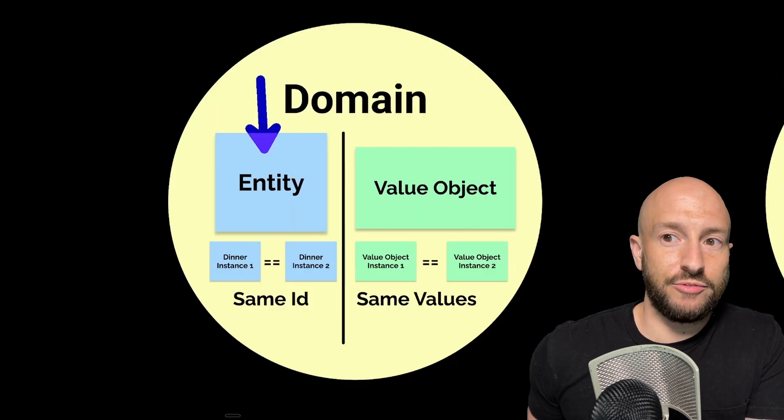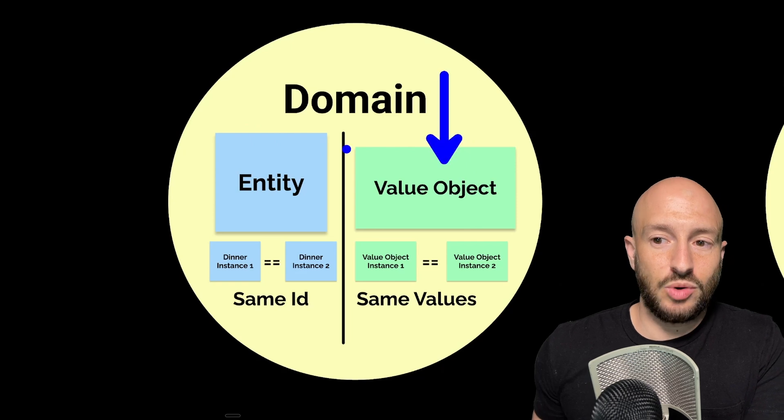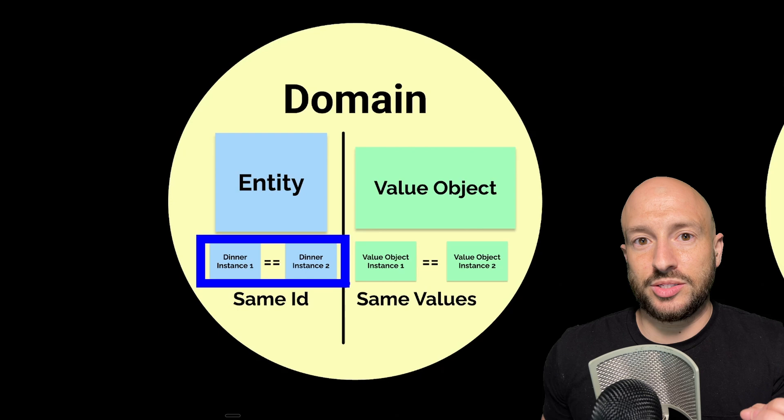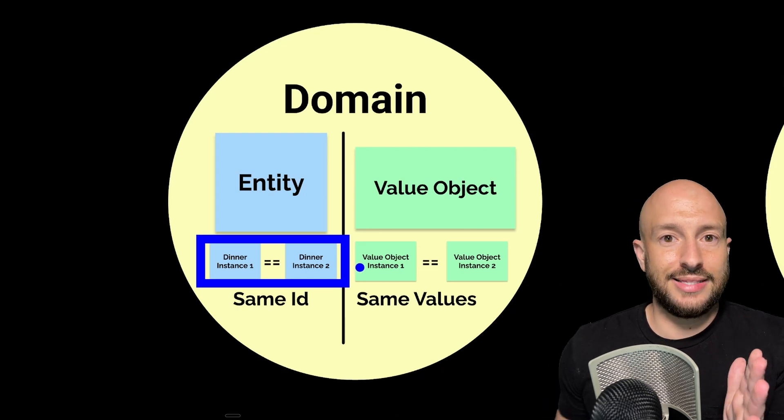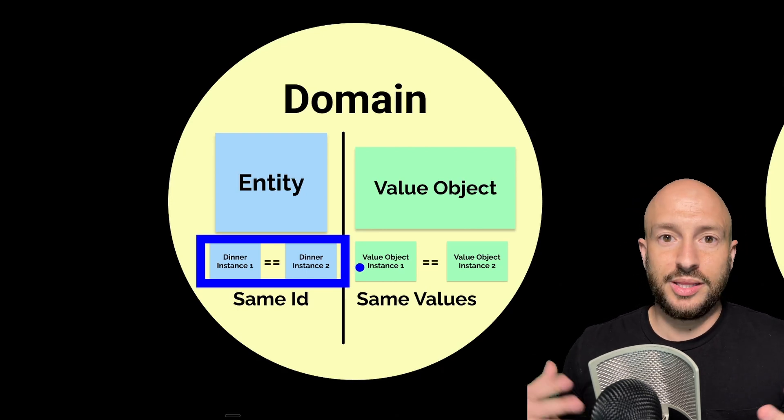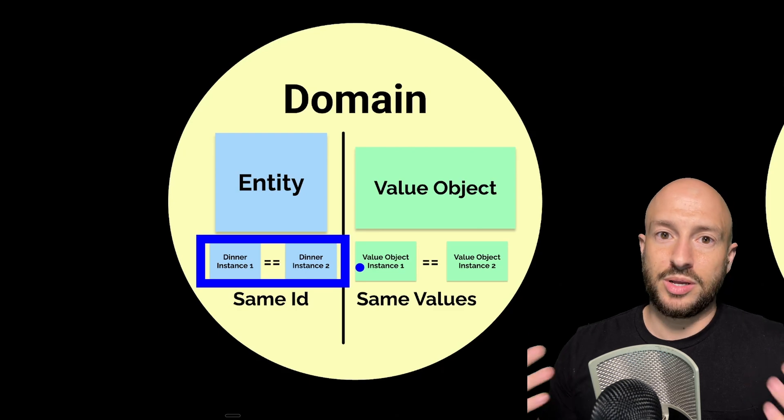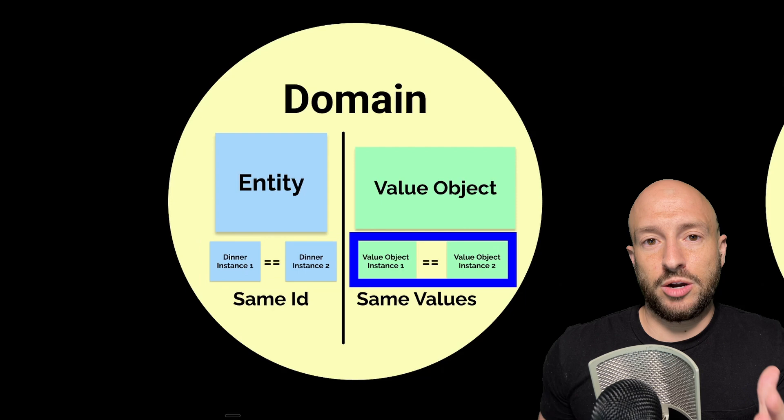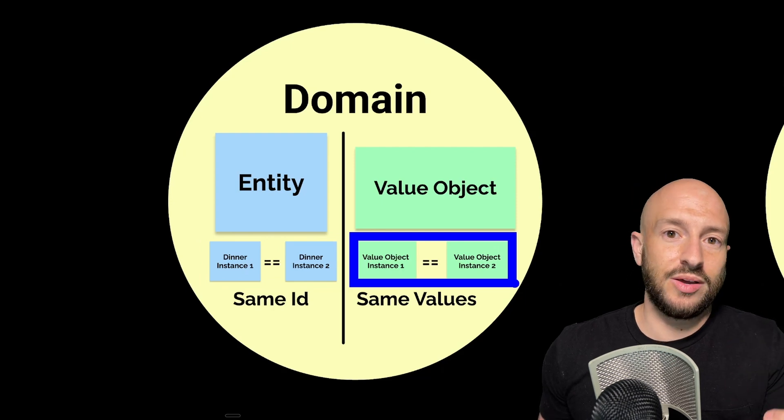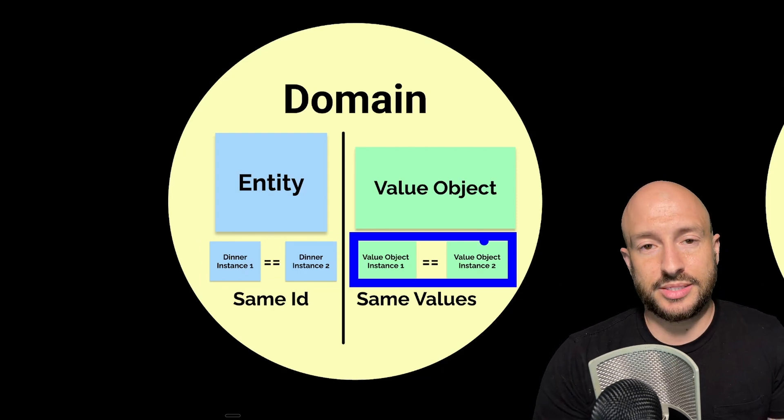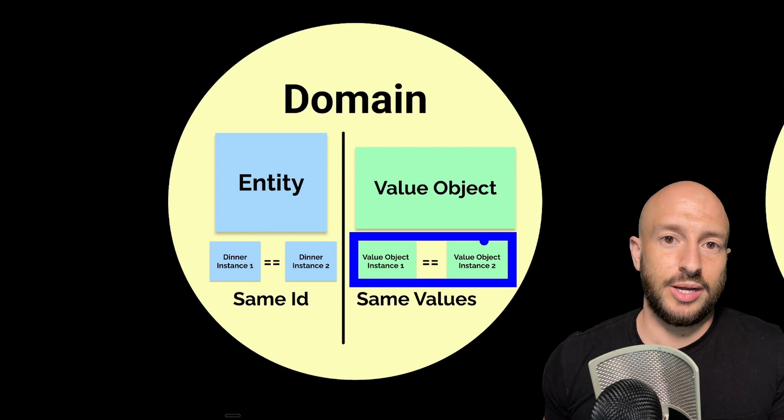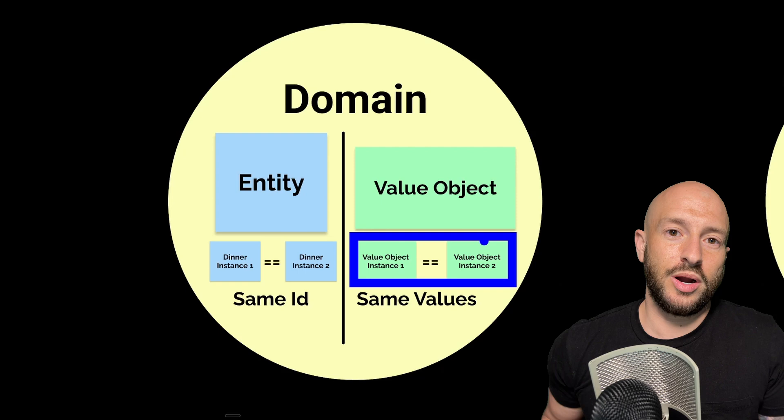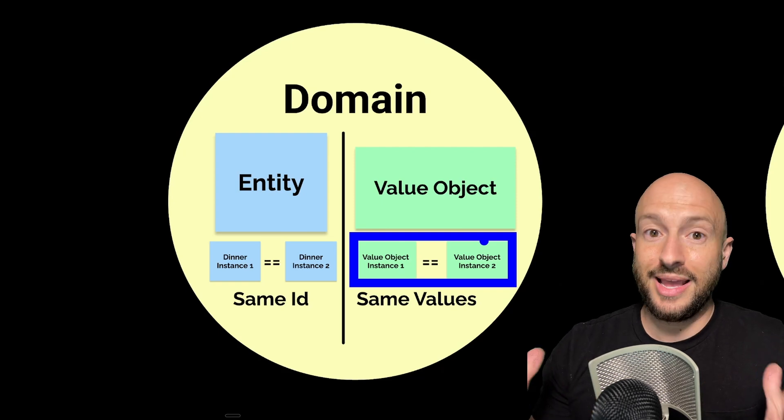So like we said, every domain object is either an entity or a value object. And what's important to note is that for entities, two entities are considered equal if their IDs are the same. So even if the values are completely different but the ID is the same, then we consider the two entities to be the same entity. And for value objects, all we care about are the values. So if the values are the same, then they're considered equal.